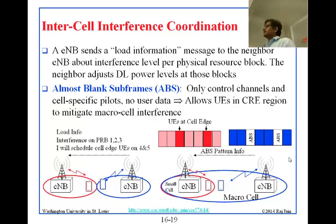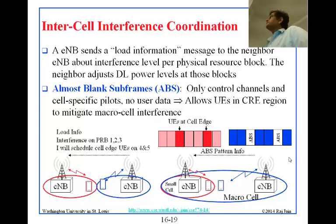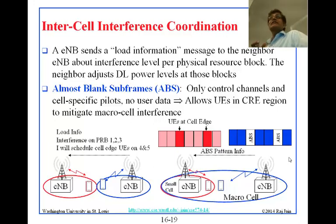Inter-cell coordination applies whether it is a relay node or not — it is essentially another version of CoMP coordination between two cells. Here is one cell and another cell with two mobiles at the edge, or it could be a big macrocell and a small cell with mobiles at the edge. In either case, the two ENBs coordinate via the underground link. One ENB sends a load information message to the neighbor ENB about the interference level for each physical resource block — which is 12 subcarriers and 7 slots.